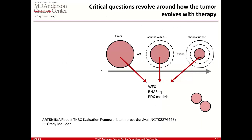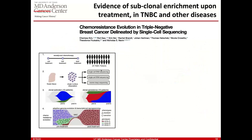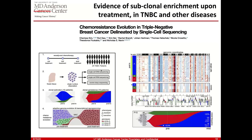A clinical trial at MD Anderson involves longitudinal biopsies and assesses the response of tumors to AC — adriamycin and cyclophosphamide. If the patient responds well, it goes on to use taxane. If not, several biomarker-matched experimental therapies are provided. Longitudinal biopsies are performed and molecular profiling is done: whole exome sequencing, RNA sequencing, and creation of PDX models at multiple time points. A study in triple negative breast cancer by our colleagues at MD Anderson performed single cell sequencing on about 20 patients and examined how each behaves upon chemotherapy — some had clonal extinction (pathological complete response) and others showed clonal persistence.